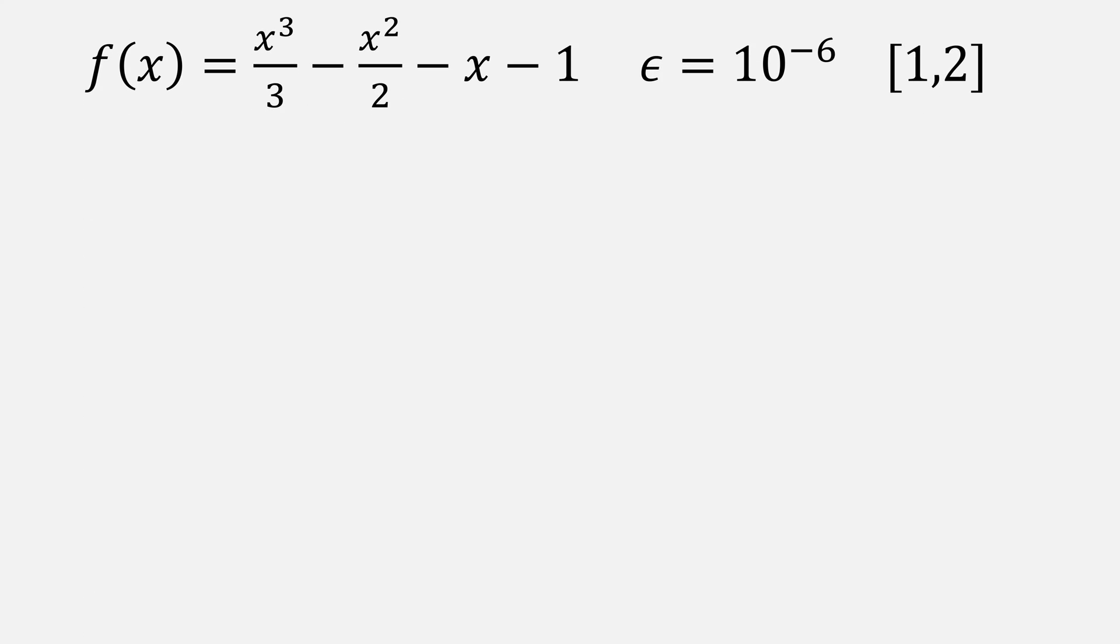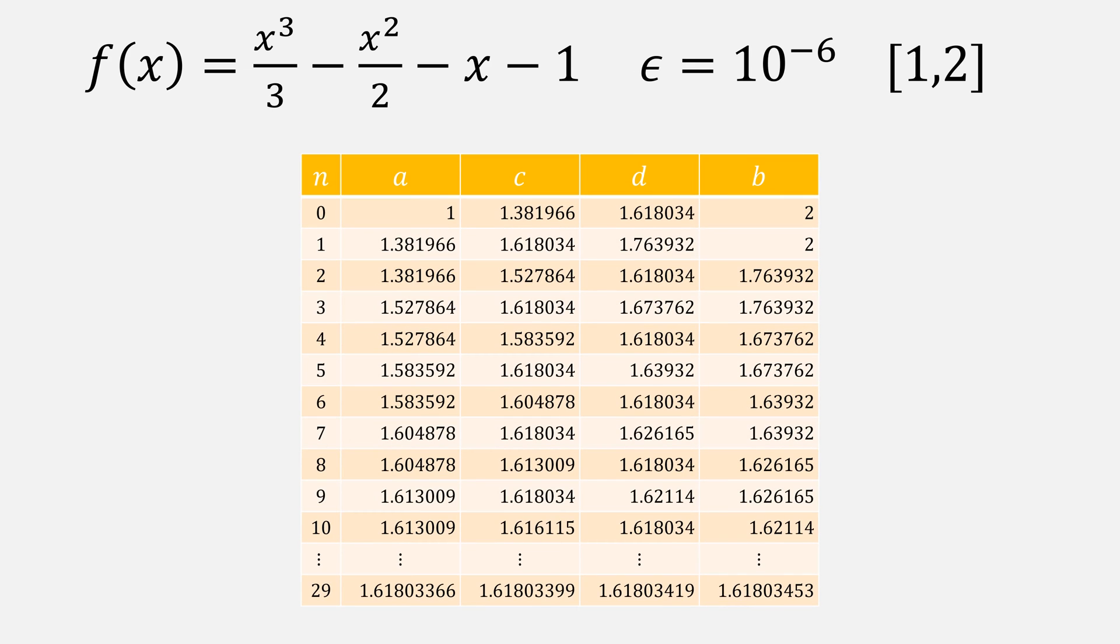Here's a numerical example for the function x cubed over 3 minus x squared over 2 minus x minus 1 with an ending epsilon 10 to the minus 6 over starting interval 1, 2. It took golden section search 29 iterations to find our solution. Notice that it also found the minimum in the first iteration, but it doesn't know that until it shrinks the interval space small enough.